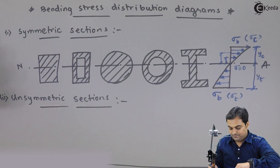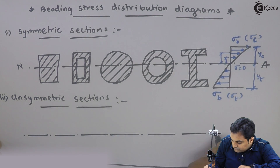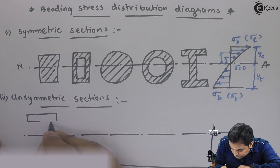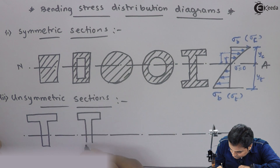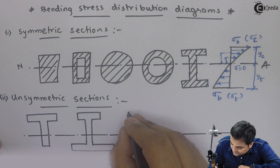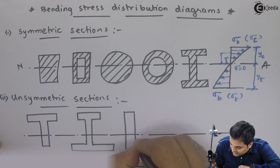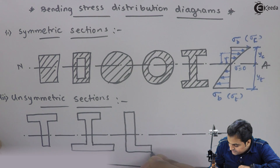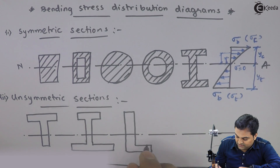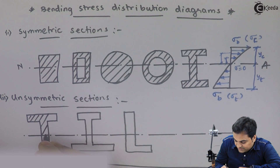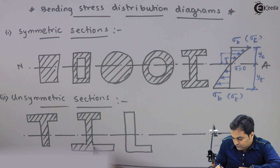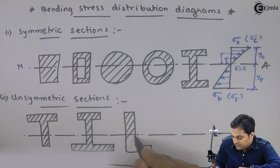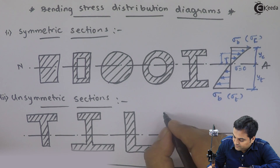Now let me show you some unsymmetric sections. This is an unsymmetric I section. This is L section, or you can say angle section — again an unsymmetric section. Fine, so you can have such unsymmetric sections. जैसे मैंने आपको यहाँ पे बताया है: T section, I section, and unsymmetric angle section. These sections are necessary for explanation.